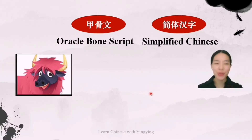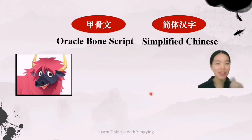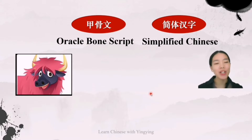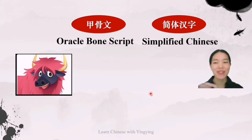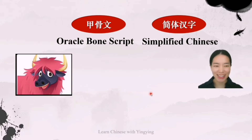You will be surprised and impressed by your own progress. The first word we are going to learn is 牛 (niú). It means ox. But before we look at the character, let's look at the picture first and dig into the origin of the word, so that when you look at the character, everything will make sense to you.